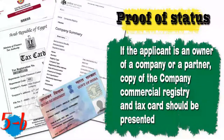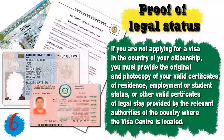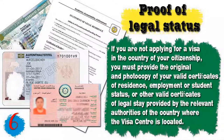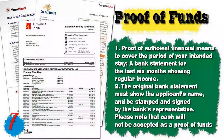If you are a student, an enrollment letter from your school or college must be provided. Number six, for foreigners not applying in their country of citizenship, you must provide the original and photocopy of a valid residence permit, employment certificate, student status certificate, or other valid certificate of legal stay issued by the relevant authorities of the country where the visa center is located. Number seven, you will need proof of funds — a bank statement for the last six months showing regular income. The original bank statement must show the applicant's name and be stamped and signed by the bank's representative. Note that cash will not be accepted as proof of funds. If you don't have a bank account, proof of any assets can also be presented.